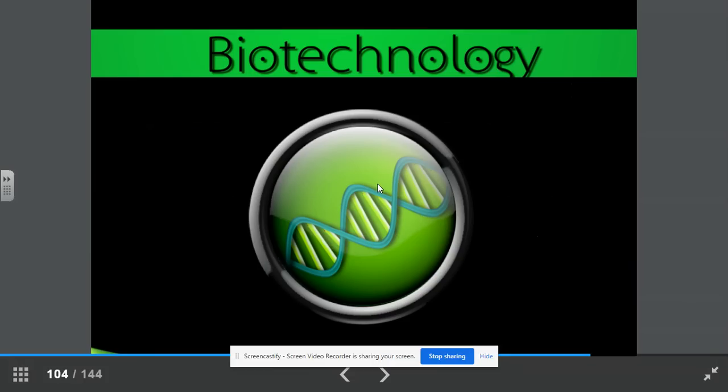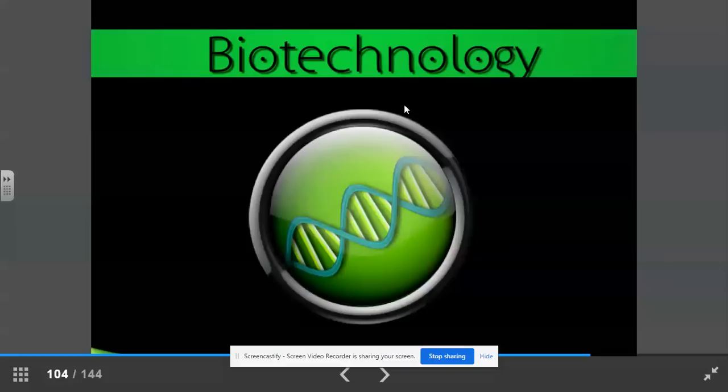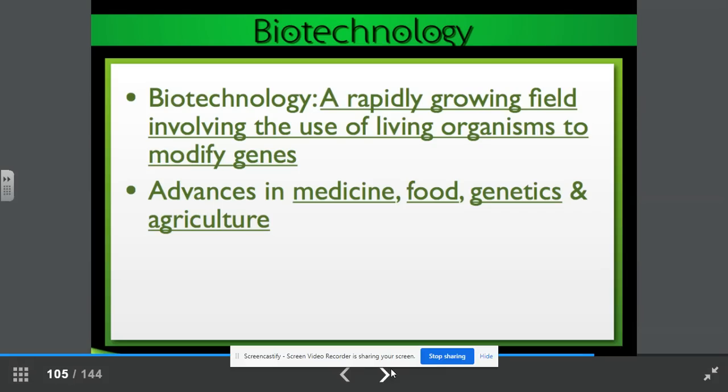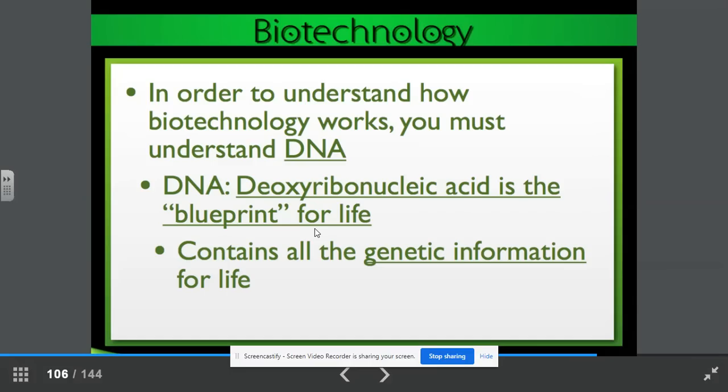Biotechnology. That was an exciting unit. Let's go ahead and turn to page 14 for biotechnology. Biotechnology is a rapidly growing field involving the use of living organisms to modify genes. Biotechnology has given us advances in medicine, food, genetics, and agriculture. In order to understand how biotechnology works, you must understand DNA. We know DNA, which stands for deoxyribonucleic acid, is the blueprint for life. It contains all the genetic information for life. Here is a model of DNA. Do you remember the parts?